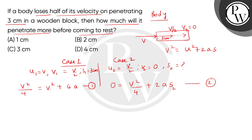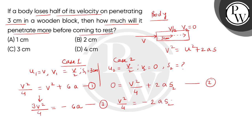Now, from equation 1, we derive: V²/4 − V² = 6A, which gives −3V²/4 = 6A, so V²/4 equals minus 6A. This is equation number 3. From equation 2, we derive: V²/4 = −2As₂. This is equation number 4.